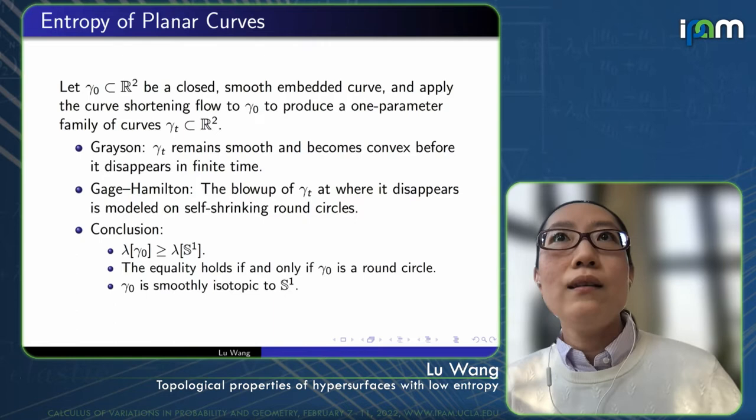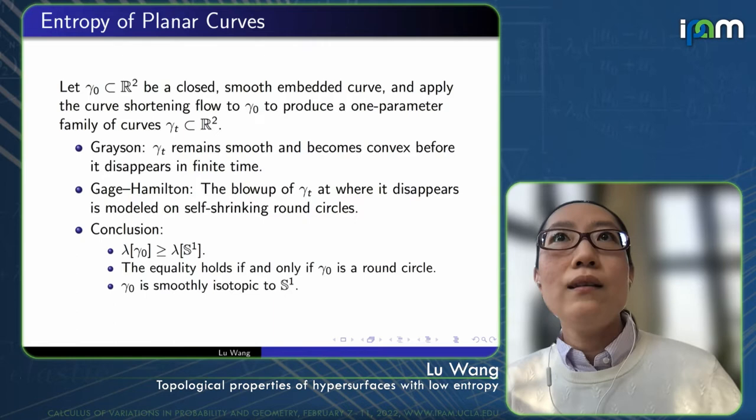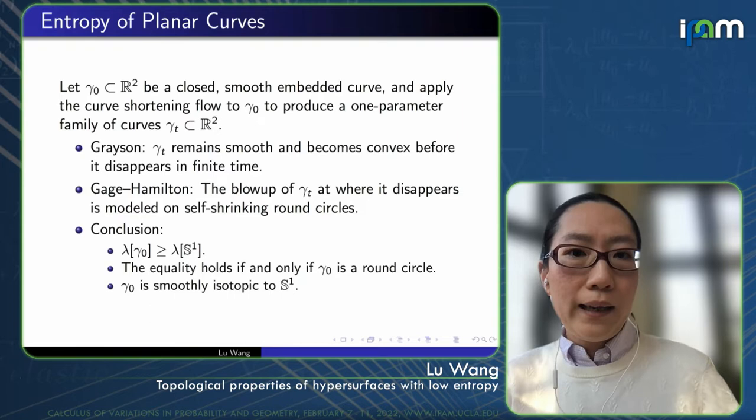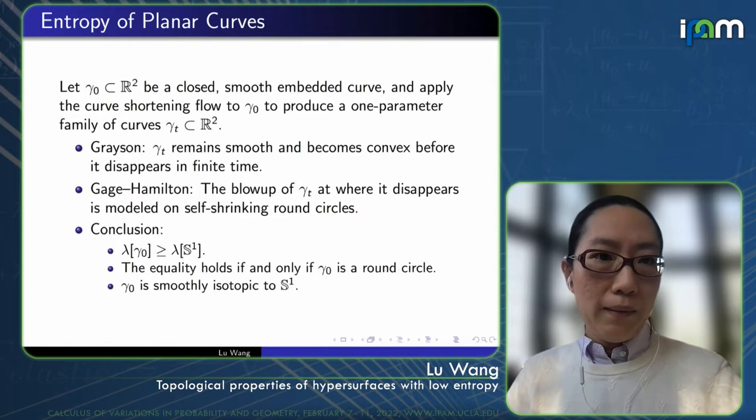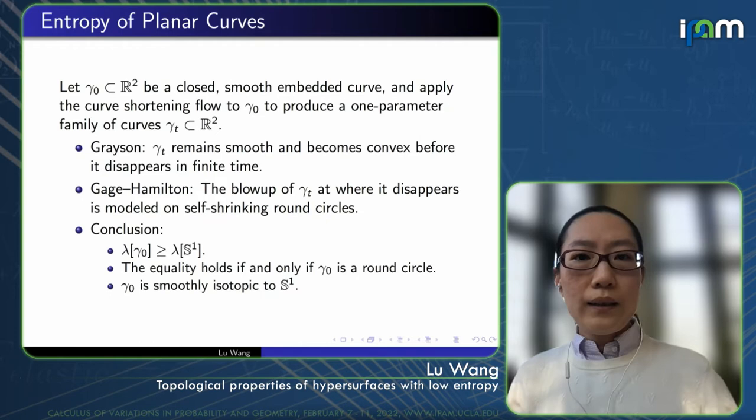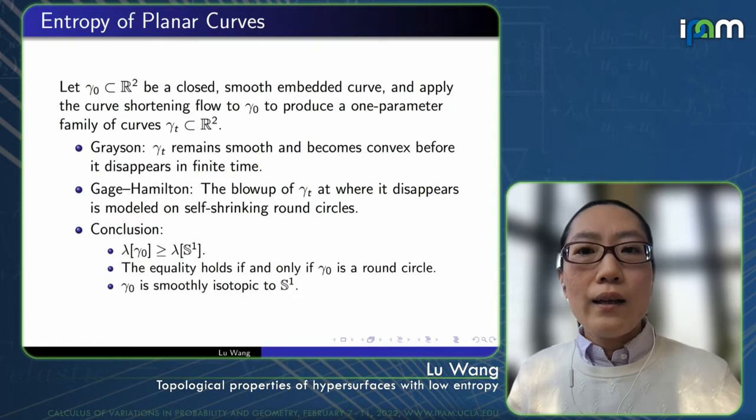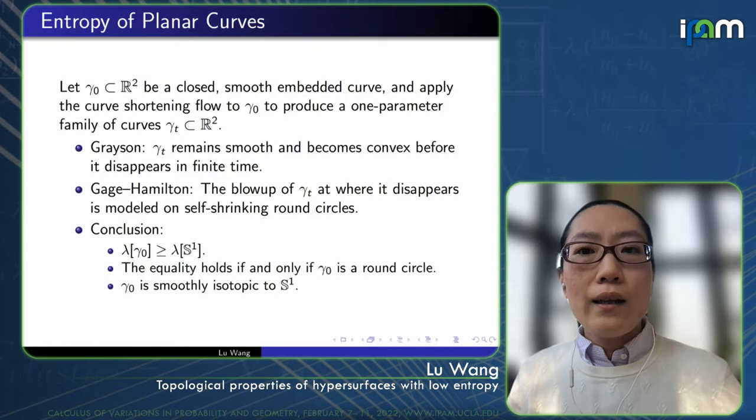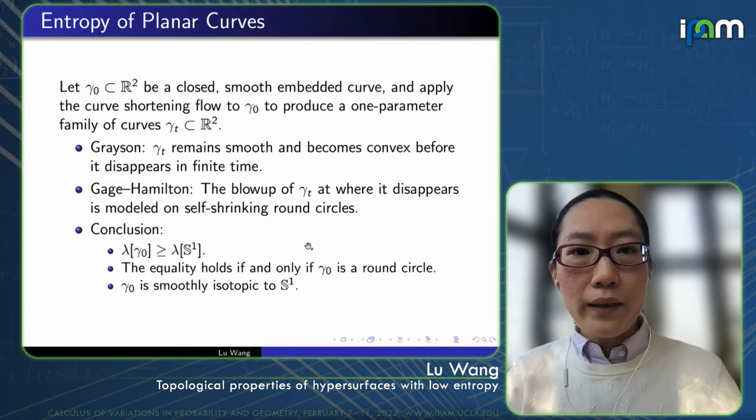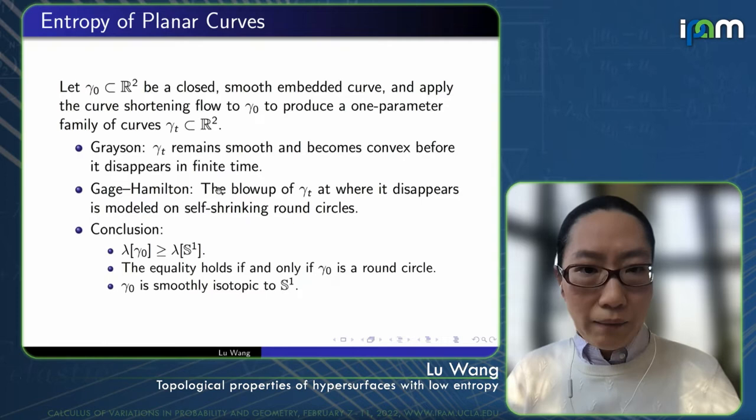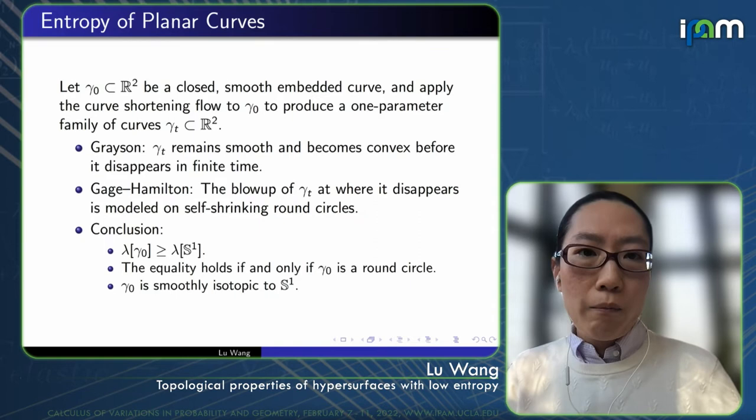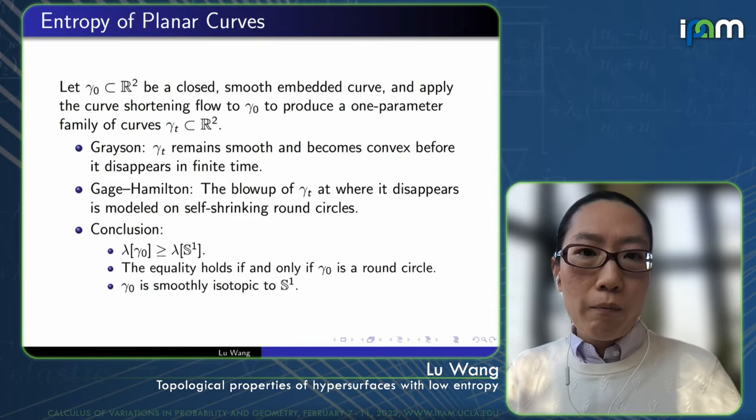It would be natural to wonder whether we can extend these ideas to higher dimensions. Instead of considering a curve in the plane, one could ask, what about if I consider a closed hypersurface in general dimensional Euclidean space? Of course you can always start a flow at a closed hypersurface. The difference between the low-dimensional curve case and higher dimension is that in the higher dimensional case, the flow may actually develop singularities even before it disappears. The difficulty in higher dimension is that singularities in the flow will be more complicated than the curve case.